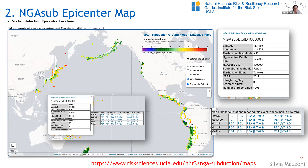The next map is the epicenter map — all the epicenters for NGA subduction, all around the ring of fire, color-coded by magnitude. We've got magnitudes ranging from 2.2 all the way to 9.12. If you click on one of these epicenters, it gives you metadata about that event. For example, I clicked on Tohoku, and it tells you the number of recordings we have for that event. For each event, we have a map of intensity measures.